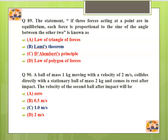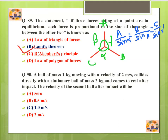Question number 89: The statement — if three forces acting at a point are in equilibrium, each force is proportional to the sine of the angle between the other two — is known as Lami's theorem. From this, with three forces A, B, C acting at a point with angles alpha, beta, and gamma: A/sin(alpha) = B/sin(beta) = C/sin(gamma).